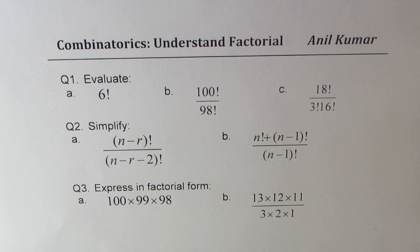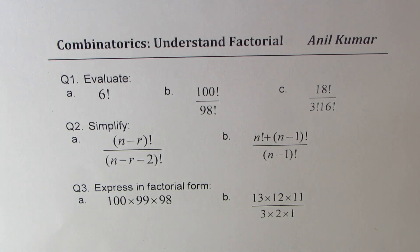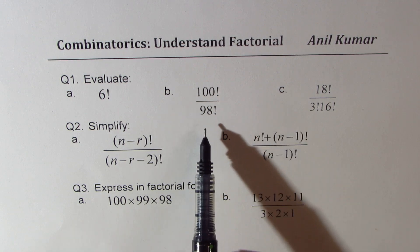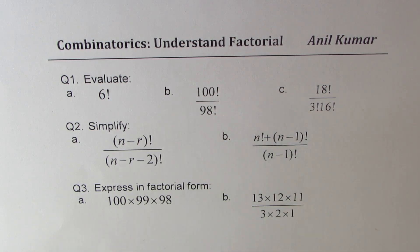Here we have three questions which will help you understand how to evaluate factorials. Question number one: evaluate 6 factorial, 100 factorial divided by 98 factorial, and 18 factorial divided by 3 factorial times 16 factorial.